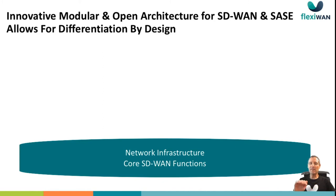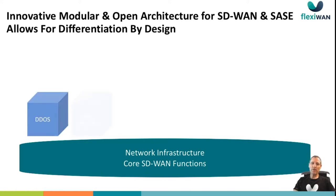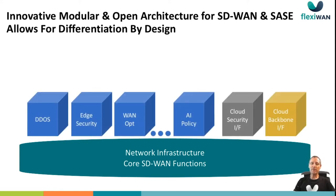On the technical side, we slice SDWAN into horizontal layers. You have the networking infrastructure — these are the core SDWAN functionalities: centrally managed IPsec tunnels, zero-touch provisioning, routing protocols and much more. On top of that, we have the application framework which allows you to dynamically load third-party applications that run in the data flow of the router or in the management. You can also see interfaces to additional services like cloud security services and the backbone.